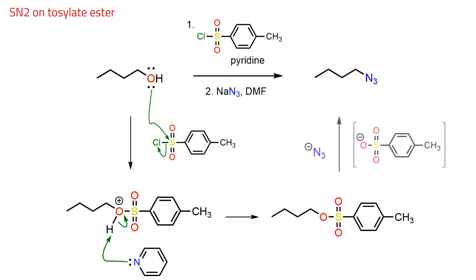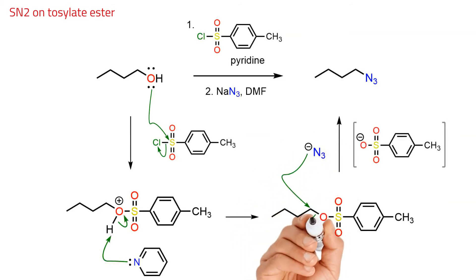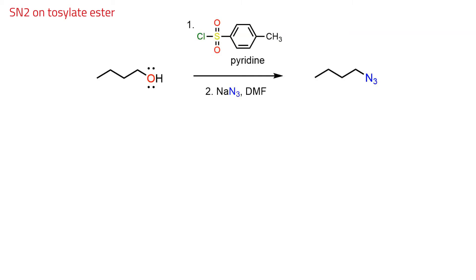The nucleophile in the second step attacks from the back and kicks out the resonance stabilized leaving group. The employment of sulfonate esters in SN2 chemistry is an important alternative to using dangerous alkyl halides as substrates. In the first step an alcohol is activated using tosyl chloride, and in the second step the leaving group is displaced on the electrophilic carbon by a good nucleophile to give the SN2 product.